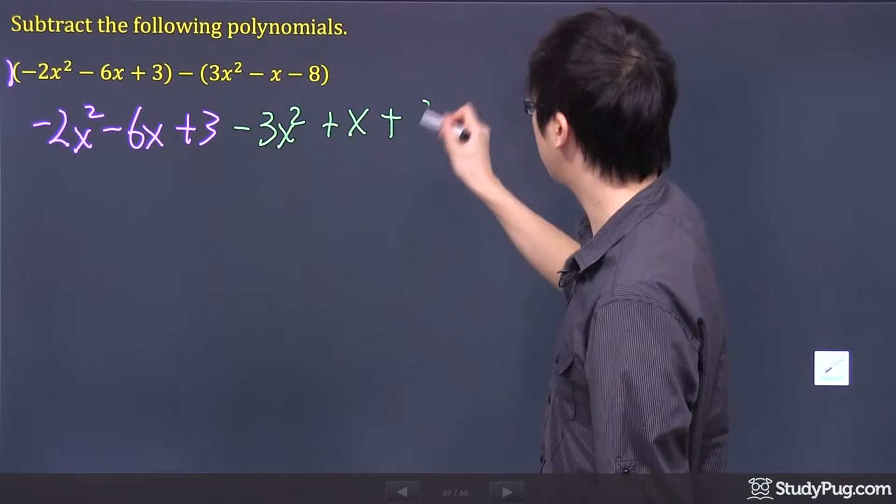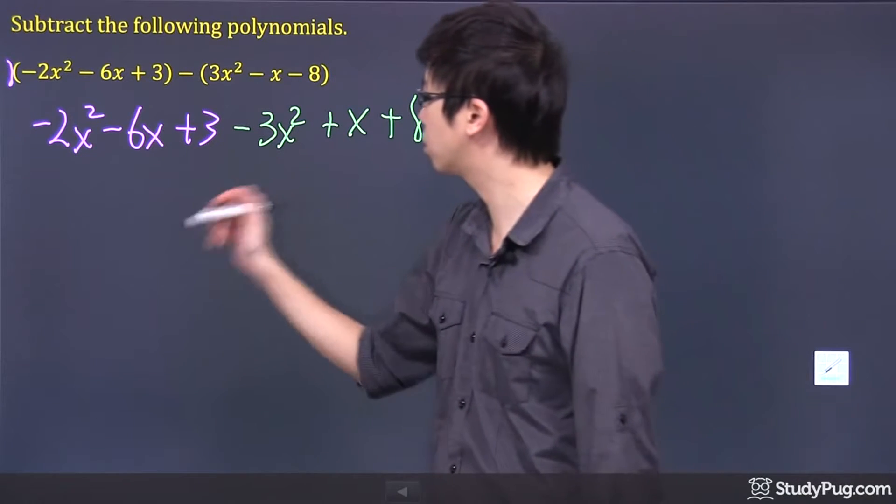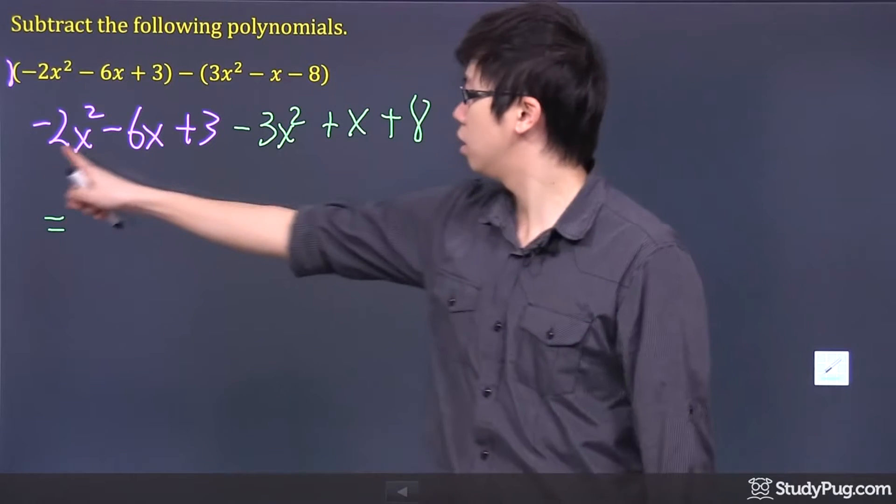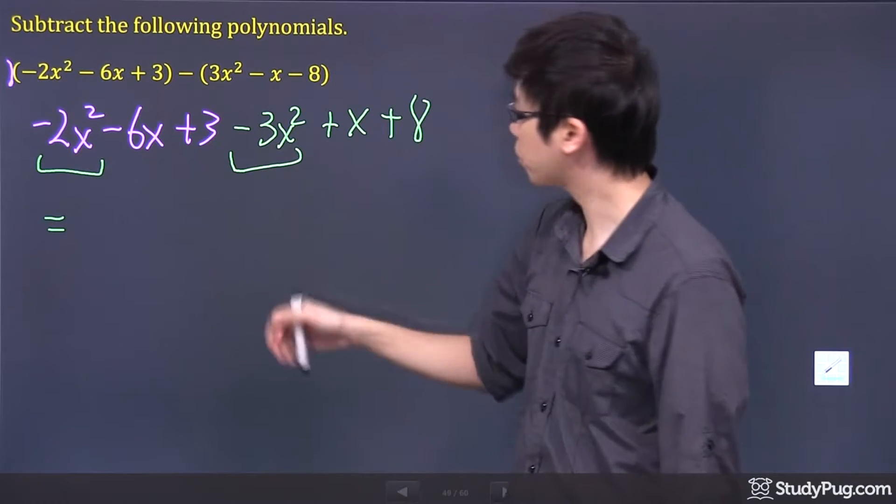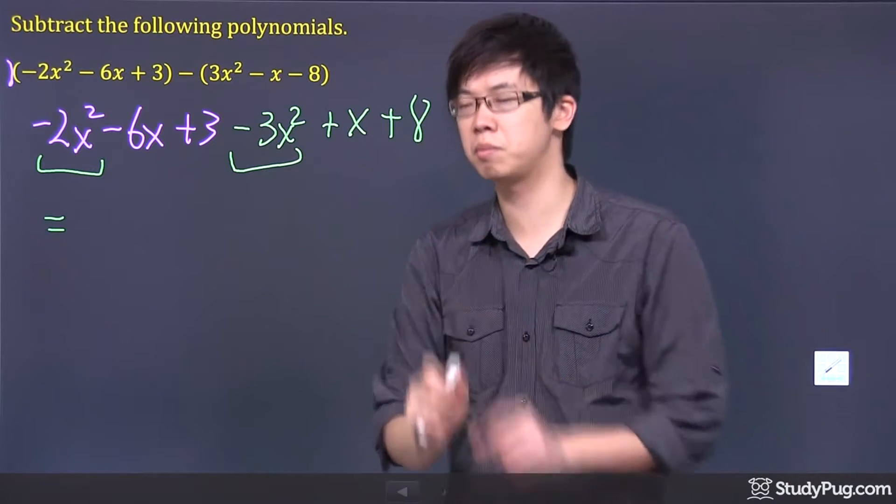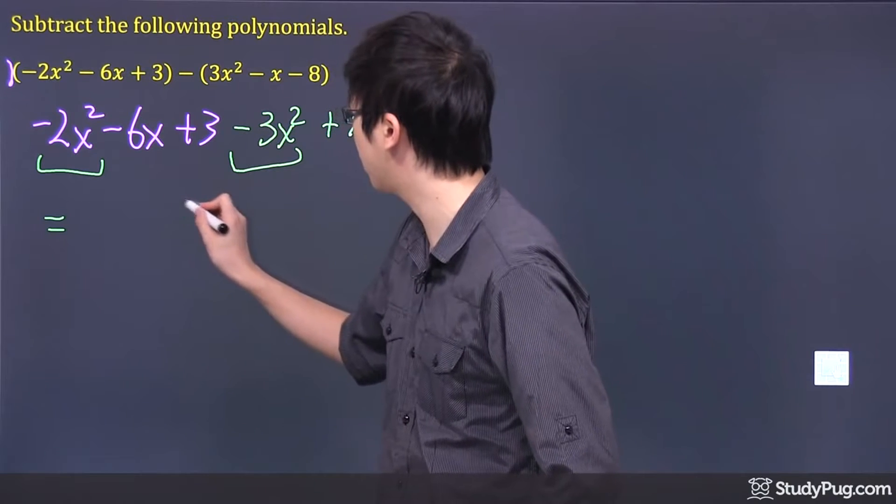And that's the end of your question actually, but if you can collect the like terms that will be great. Negative 2, negative 3, because these guys are like terms, right? So when you get a negative 2 and negative 3, you can slide them and put them together, you get yourself a negative 5x squared.